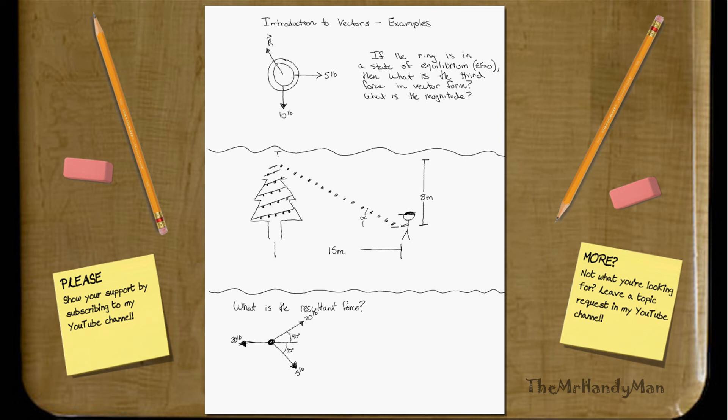If the ring is in a state of equilibrium, and remember that means all the forces, when they add up, that equals zero. Then what is the third force in vector form, and then also they want to know what the magnitude is.